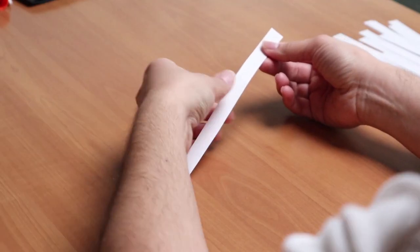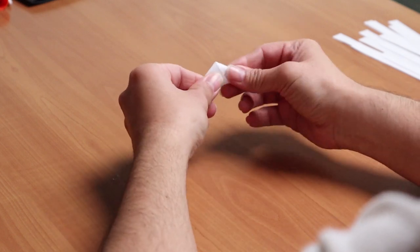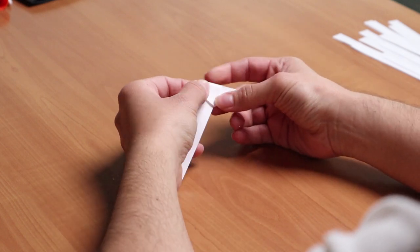Step two, take one strip, tie a knot at the end and pull gently, then lightly flatten.